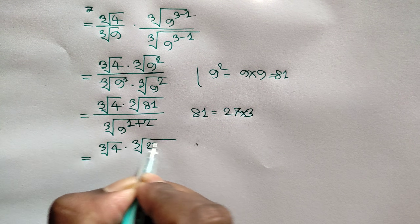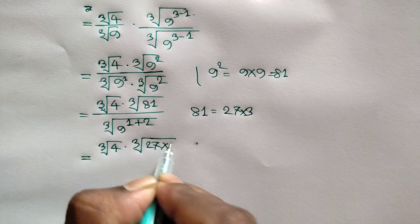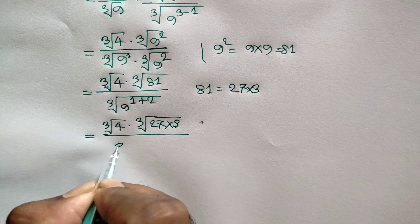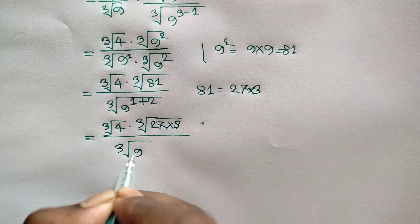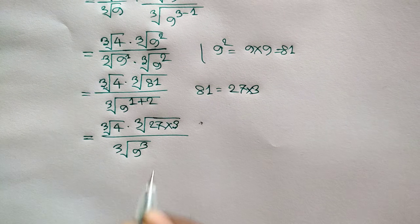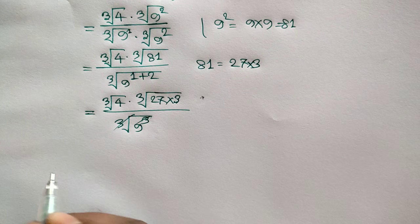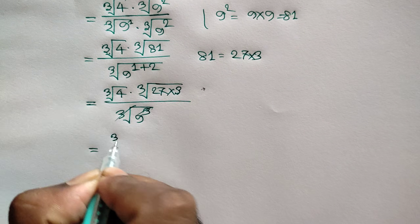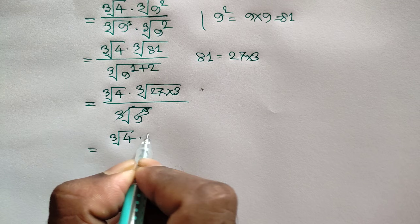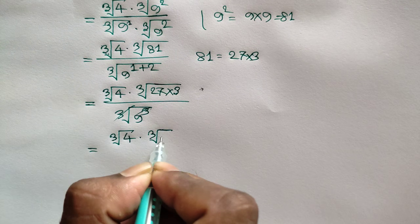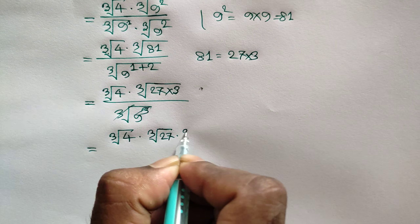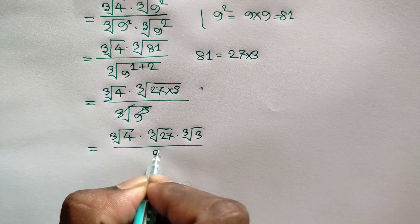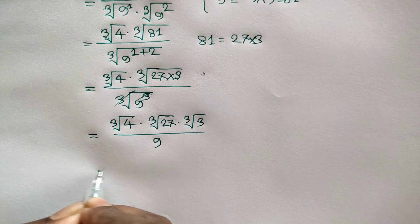Cube root of 4 times cube root of 81, and 81 can be written as 27 times 3. So we write 27 times 3 over cube root of 9 to the power 3. Since 2 plus 1 is 3, this cancels out.